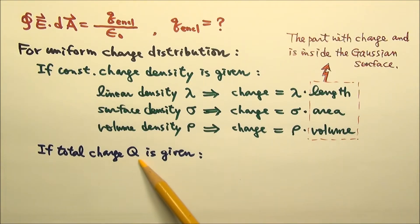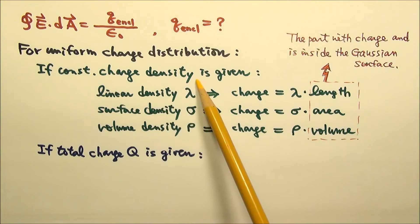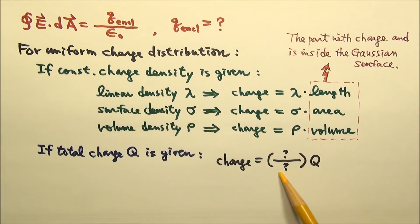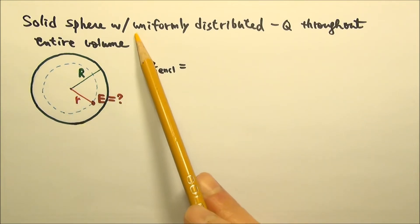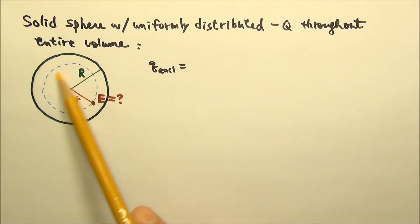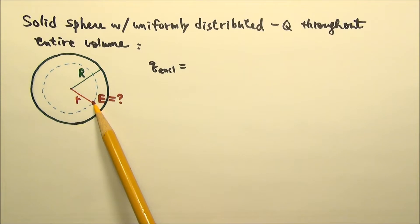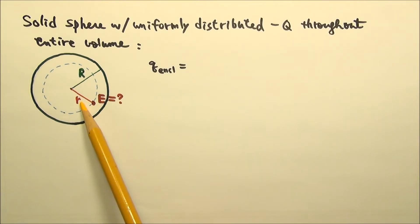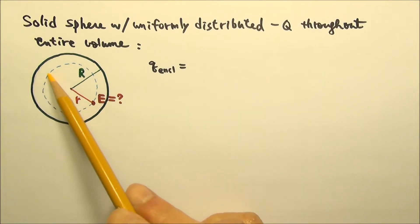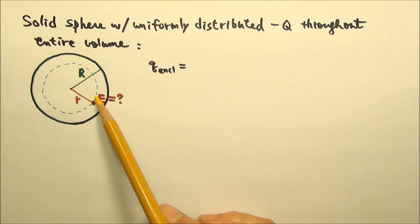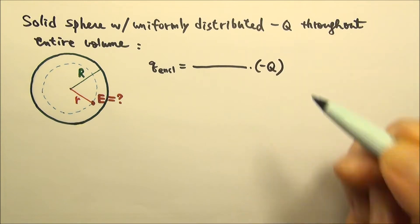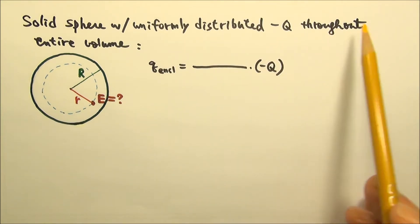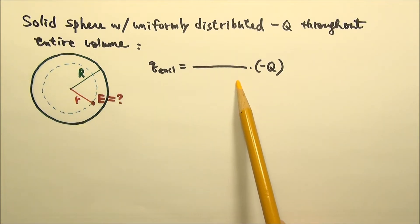What if what's given is the total charge q instead of the charge density? We would have to find what fraction of q is enclosed by the Gaussian surface. For example, here we have a solid sphere with radius R and a uniformly distributed negative q throughout the entire volume. We're looking for the electric field at a distance little r from the center. The charge inside this spherical Gaussian surface is only a fraction of negative q. Since the charge is uniformly distributed, the fraction of charge equals the fraction of volume.